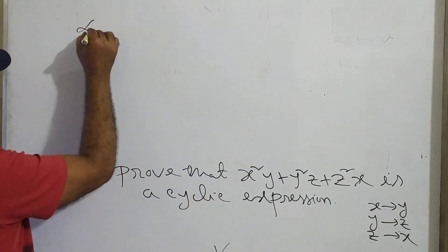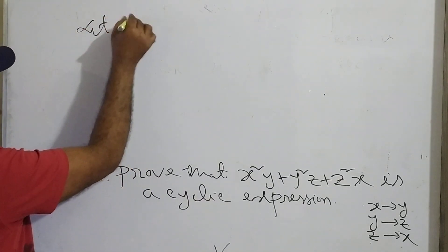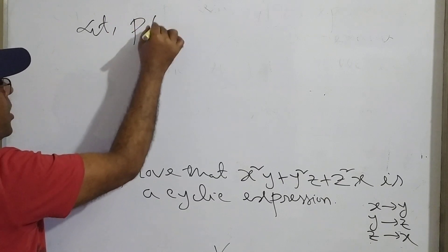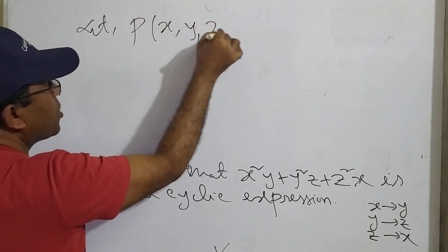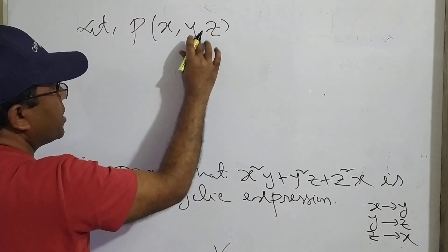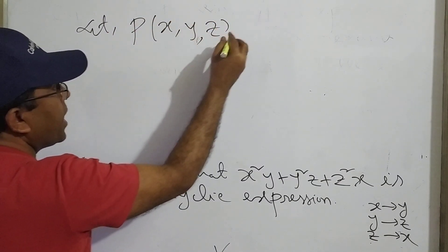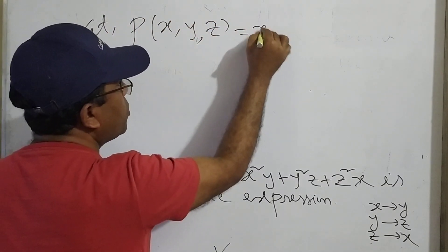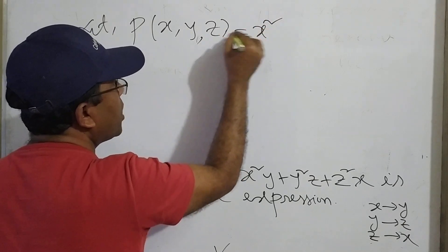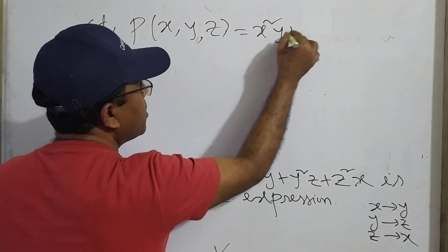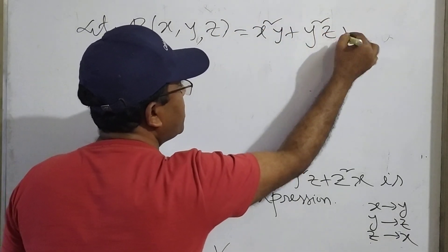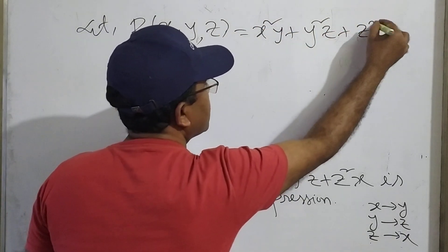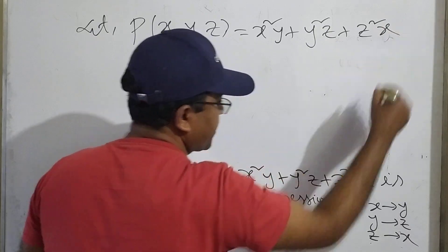Let us consider P of x, y, z, which equals x squared y plus y squared z plus z squared x.